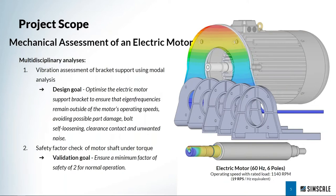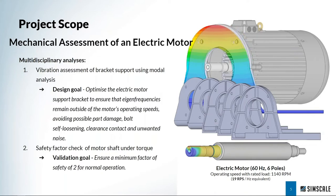If we look at the model on the right-hand side, this is our electric motor — 60 Hz with six poles, and the operating speed with rated load is at about 1140 RPM. That is 19 rotations per second, which is its hertz equivalent value of 19 Hz. So we need to be very careful if we see eigenmodes or a natural frequency somewhere close to that operating speed. That's very critical and we're going to be looking to mitigate the dangers associated with that kind of vibration.